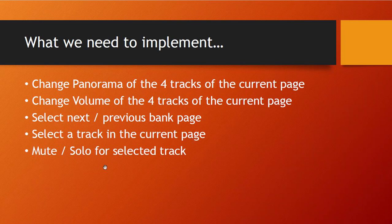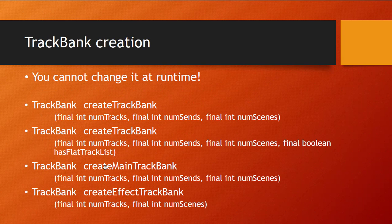Creating a track bank is not as straightforward as creating a transport, because there are many different methods available. You need to understand that Bitwig has different types of tracks: instrument tracks, MIDI tracks, hybrid tracks, effect tracks, and the master track. The first two methods let you monitor normal hybrid/audio tracks, the last one gives you only effect tracks, and createMainTrackBank gives you everything — all track types including the master track. There is also an option for hierarchical navigation to navigate inside groups.